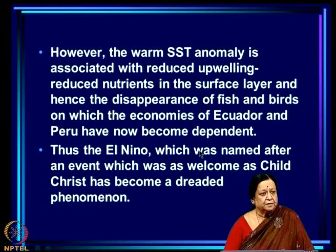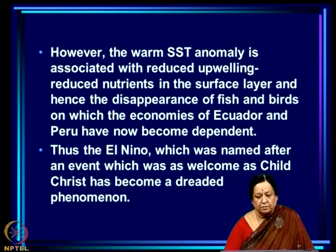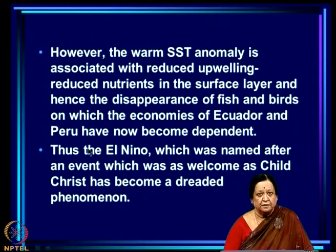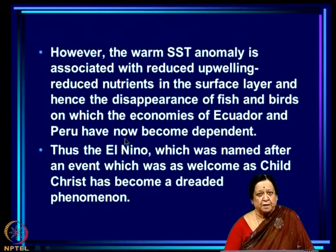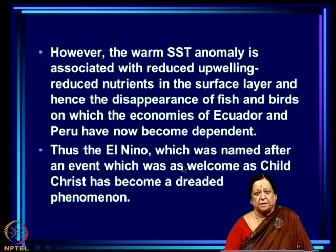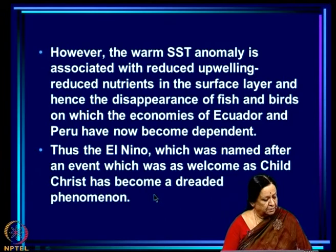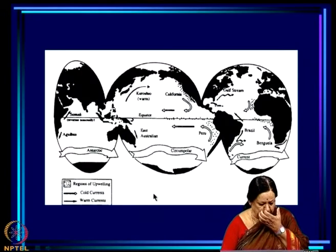However, the connotation that El Niño is associated with 'child Jesus' and is therefore a good thing — a year of abundance — has now changed. The warm SST anomaly is associated with reduced upwelling, meaning reduced nutrients in the surface layer, and hence the disappearance of fish and birds on which the economies of Ecuador and Peru have become dependent. So El Niño, once as welcome as the Christ child, has become a dreaded phenomenon.